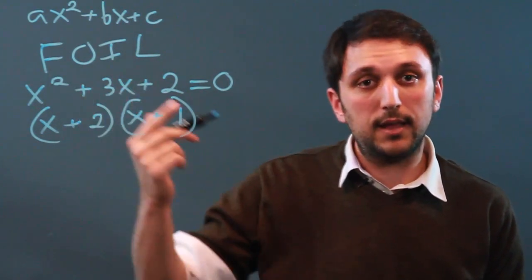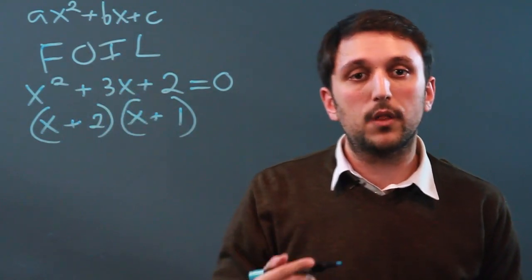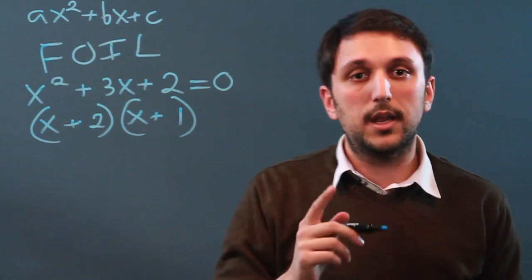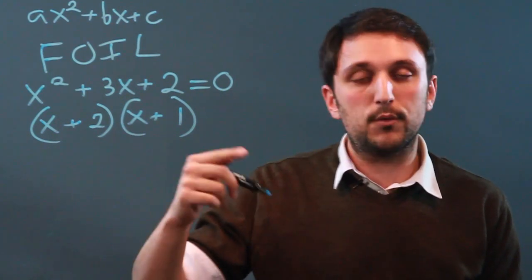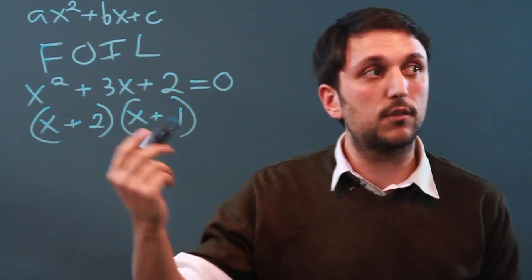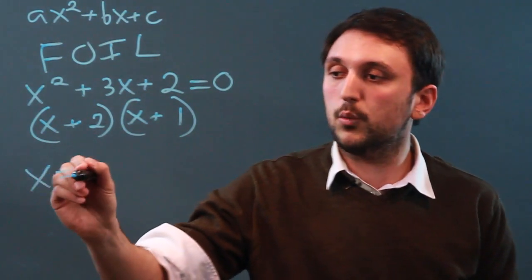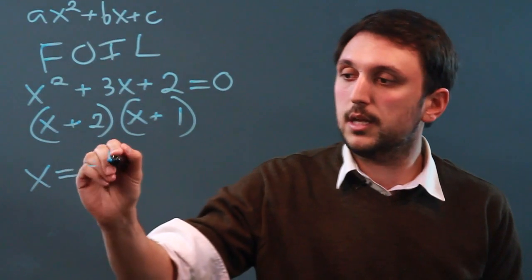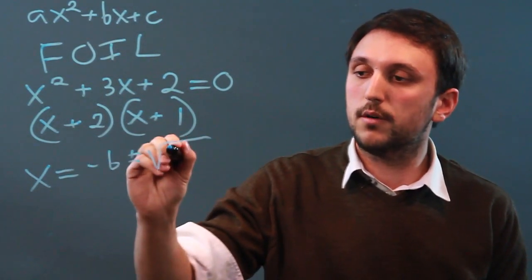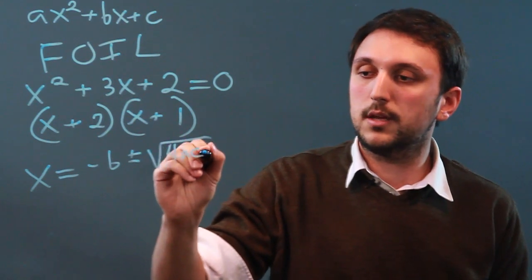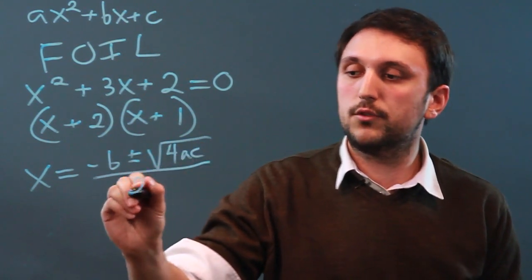Now, what if you can't FOIL? Then you need to remember the quadratic formula. Now this one is a little bit tougher to remember, but you can remember it with your a's, your b's, and c's. So, always remember that x equals negative b plus minus the square root of 4ac over 2a.